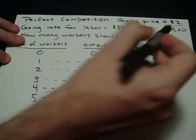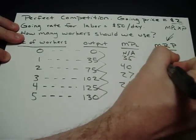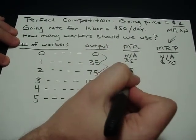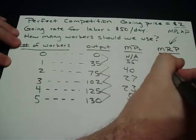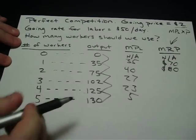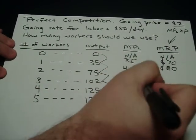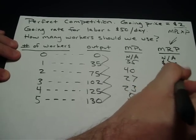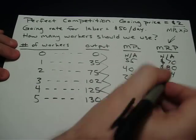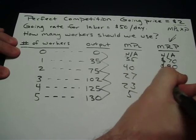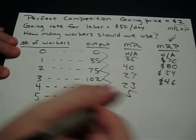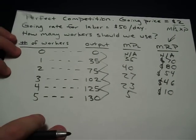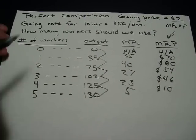The first worker produces 35 more times the $2 price, providing an additional $70. The second worker produced 40 more at $2 each, adding $80 in revenue. The third worker produced 27 more, providing an additional $54. The fourth worker produced 23 more times $2, providing another $46. And the fifth worker provided an additional $10 to the business.